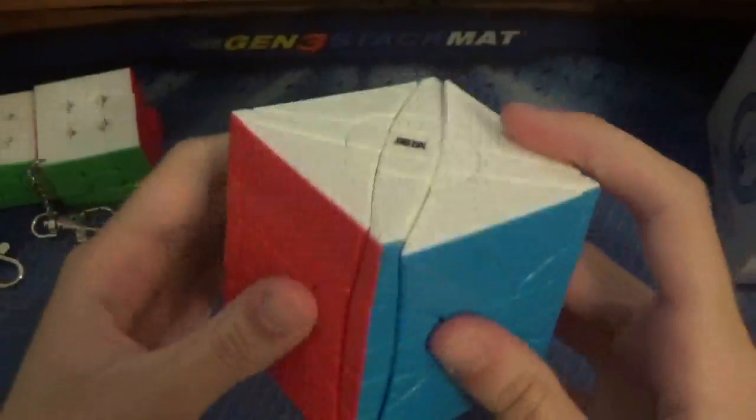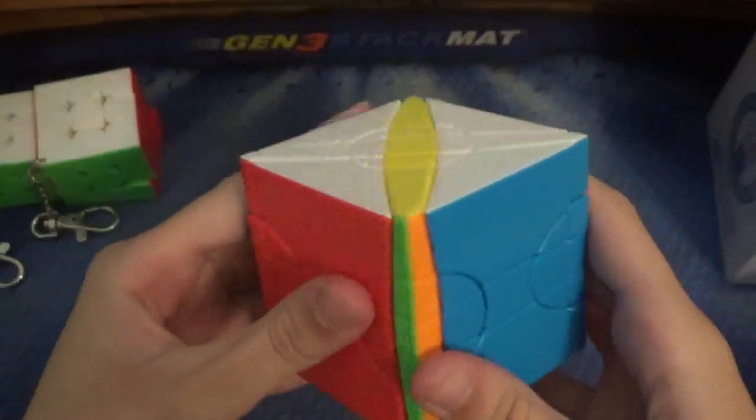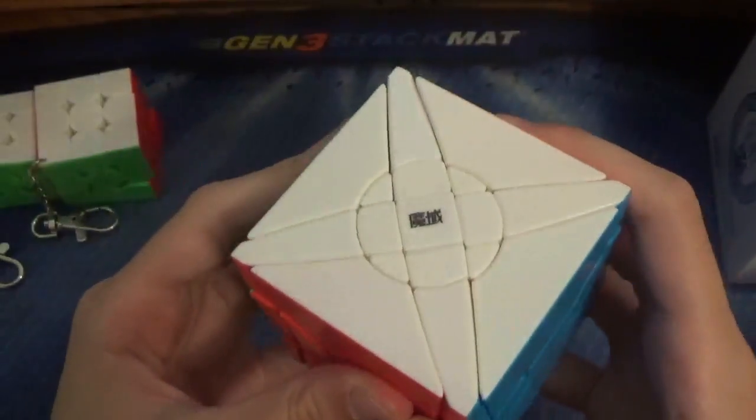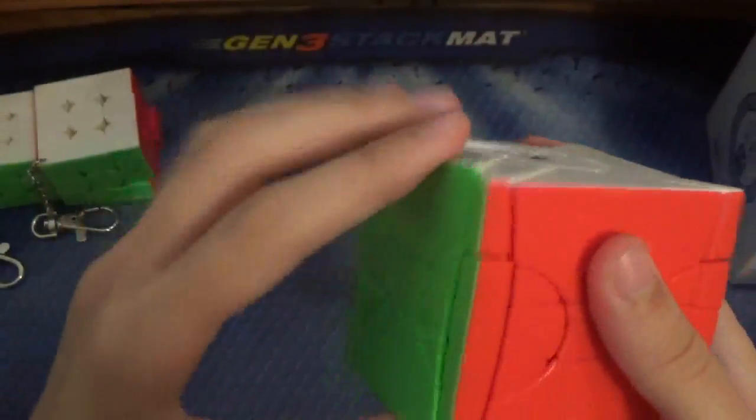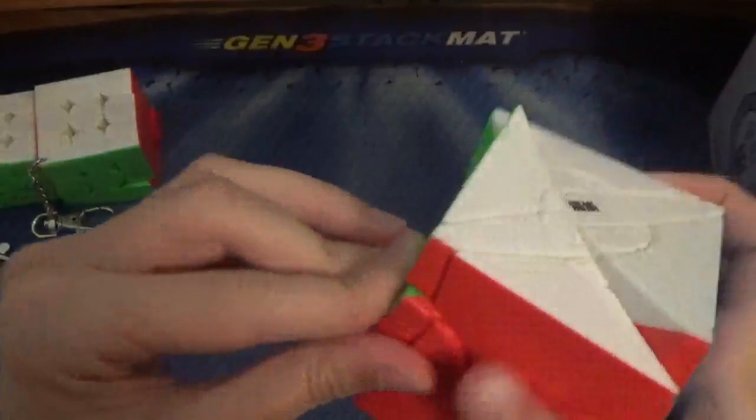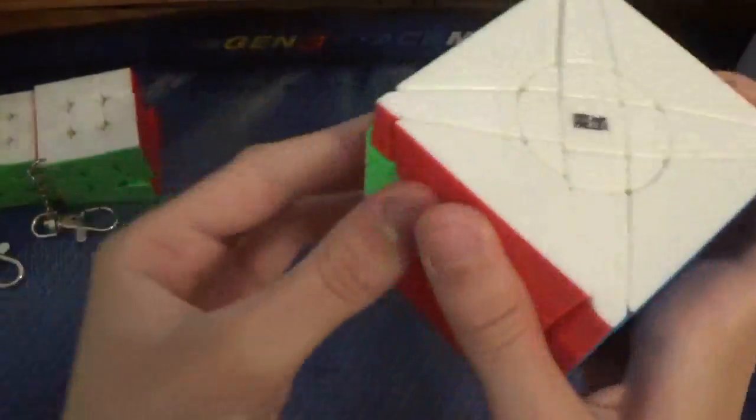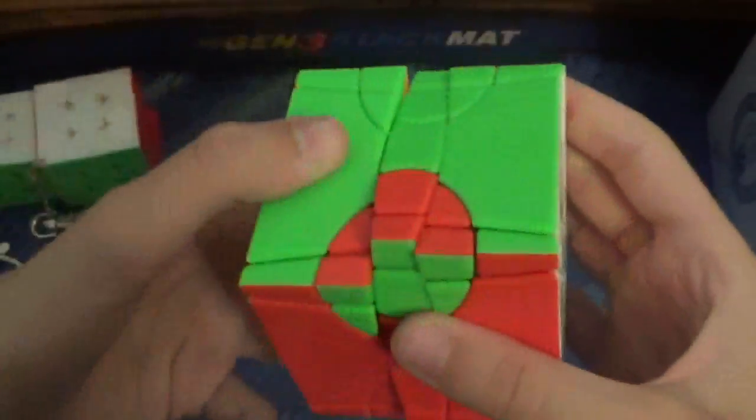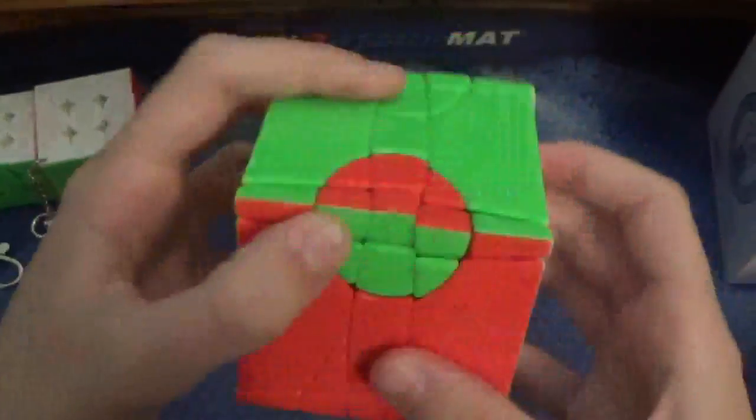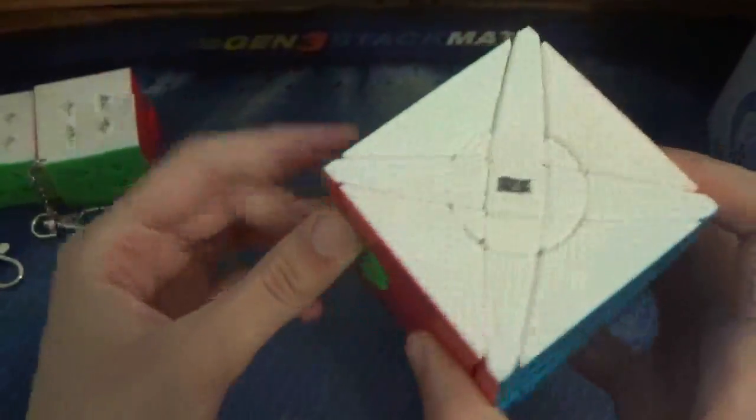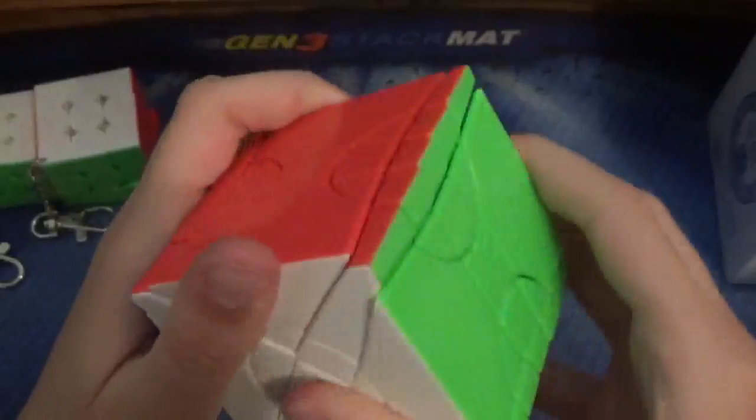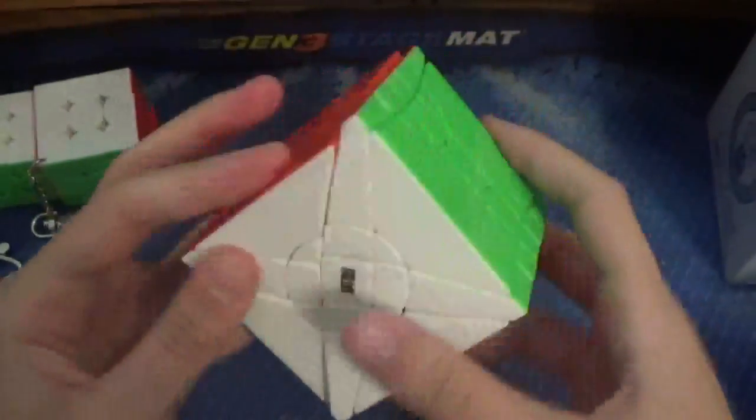But, okay, it turns many different ways. So, it has the middle slice like that. And then it has those inner things turn. Oh, my God. Alright. And then the layers can turn like that. Okay. This seems really hard to solve. Oh, my God. And it also turns like this. Wow.